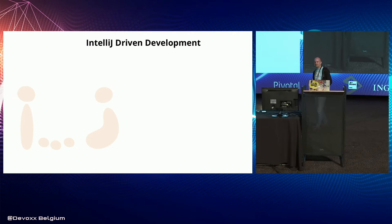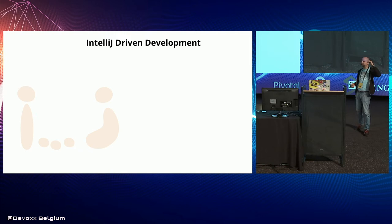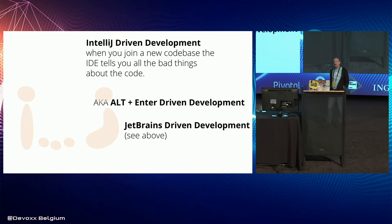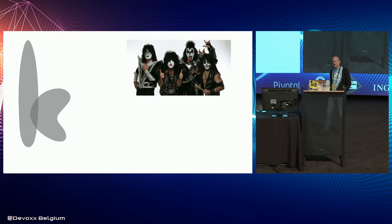I and J come together. IntelliJ-driven development is when you join a new codebase and just keep pressing Alt-Enter, and it tells you to change loads of stuff. You don't really have to think about what you're doing, but when you commit, it looks like you've made loads of sensible changes. Also known as Alt-Enter-driven development and JetBrains-driven development — they're conveniently next to each other in the alphabet.